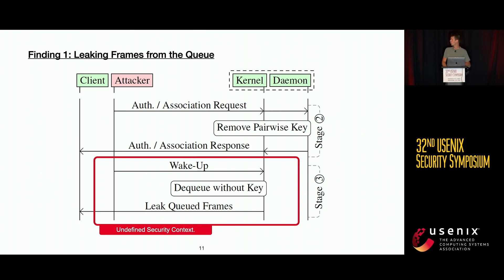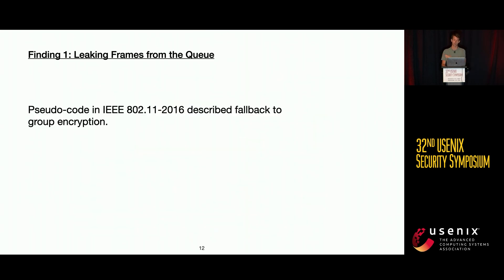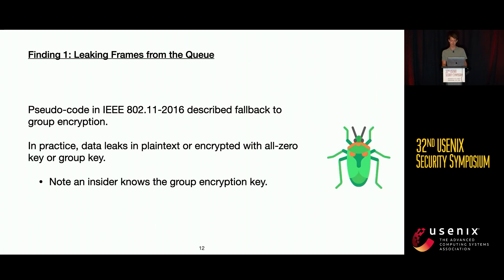This happens because, by removing the encryption keys via authentication or association frames, we enter an undefined security context — the access point doesn't know how to handle these queues in the stack, neither in hardware nor in the kernel. In some cases the data falls back to a group encryption key, since this was actually defined in the 2016 revision of the Wi-Fi specification.